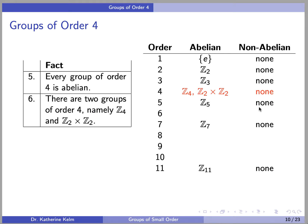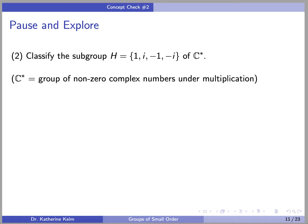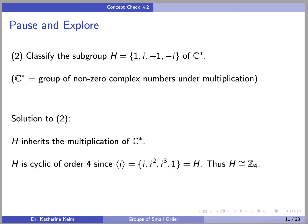We can now fill in our table for groups of order 4: there are two abelian groups of order 4 and no non-abelian groups. Here's our second concept check: classify the subgroup h consisting of {1, i, -1, -i} of C*, where C* denotes the group of non-zero complex numbers under multiplication. h inherits the multiplication of C*, so h is a multiplicative group. h is cyclic of order 4, since it is generated by i. Therefore h is isomorphic to Z4.